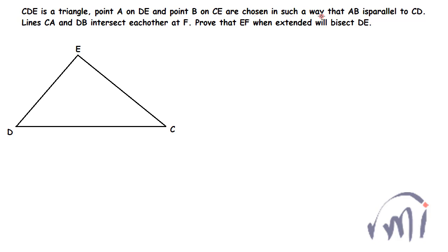So AB can be any line which is parallel to CD, and this is point A and suppose this is point B. Then line CA and DB, let me draw two lines CA and DB, these two lines intersect each other at point F.